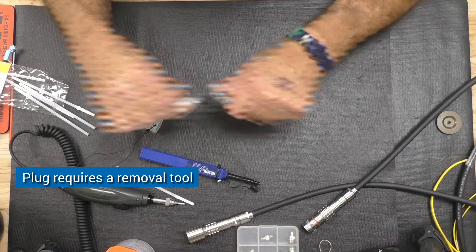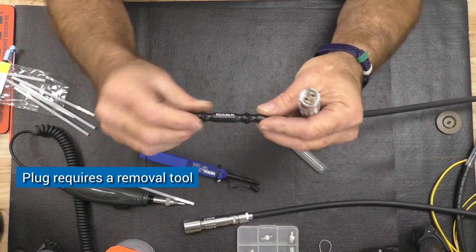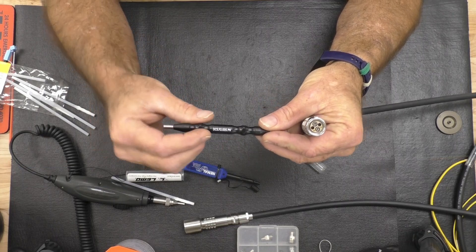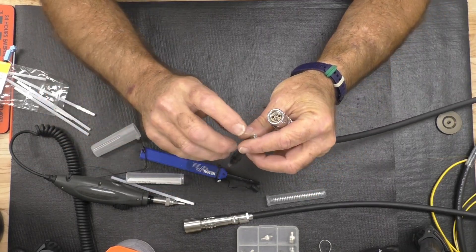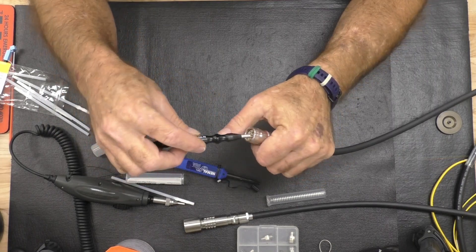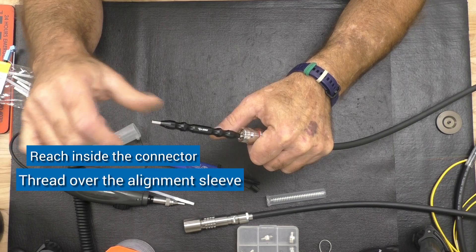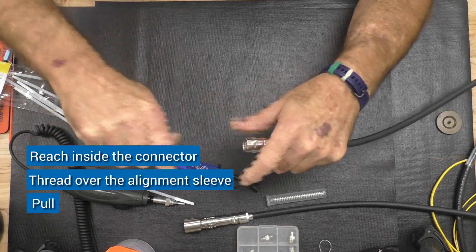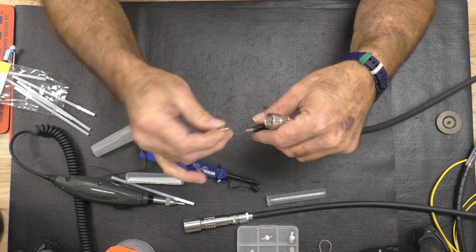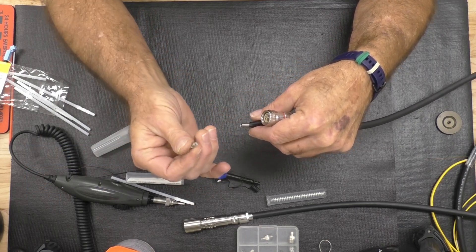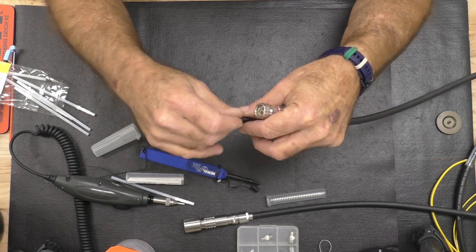The plug requires a removal tool. Lemo provides this tool with a dual threaded end. Simply reach inside the connector and thread down over the alignment sleeve and pull. This removes the alignment sleeve, which is threaded on one side and snaps on the other. Leave that on the tool until you're ready to reinstall it.